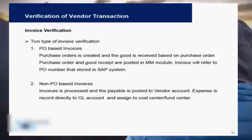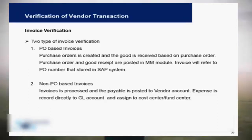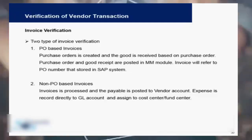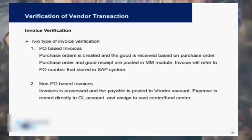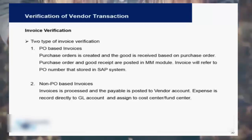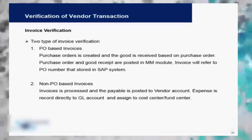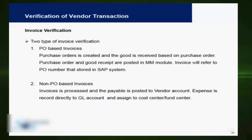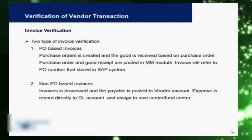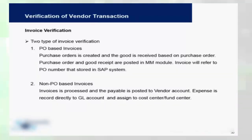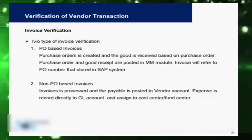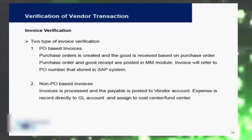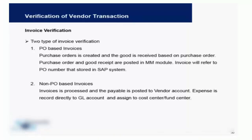There are two types of invoices. For PO-based invoices, purchase orders are first created and goods are received based on the purchase order. These two documents — the PO and GR — are first posted in the MM module. Once the invoice has been received, it is referenced to the PO number and saved in the SAP system, and this invoice flows into finance automatically.